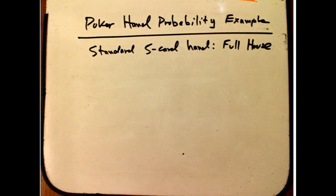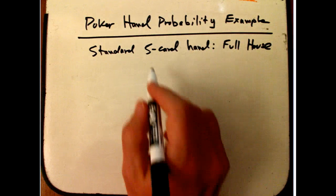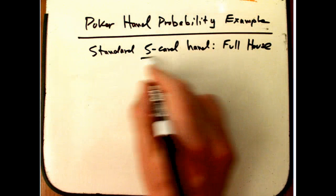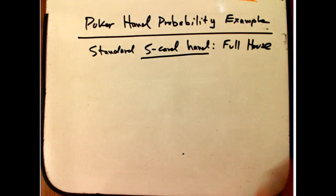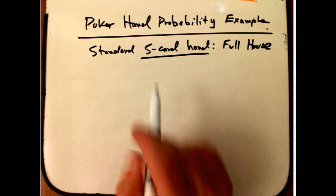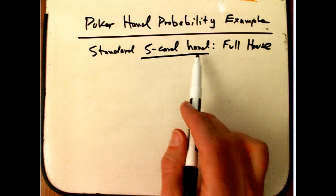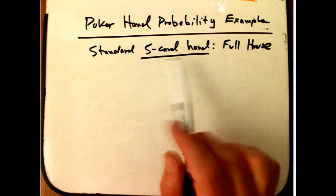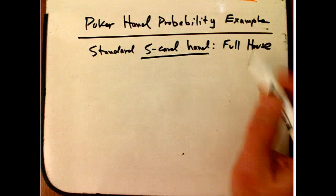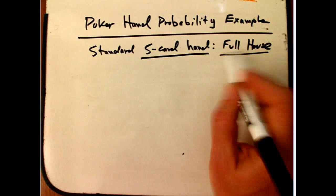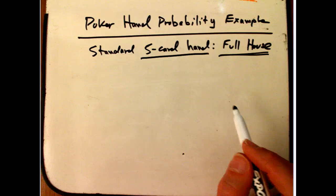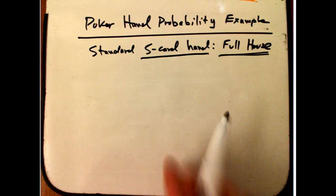Quick run through of a poker hand probability example. This is a standard five card hand. There are lots of interesting variations with poker that make the probabilities much more interesting, but this is just dealing five cards — no drawing, no picking from seven or anything like that — and the probability of getting a full house on a straight five card deal, called five card stud.